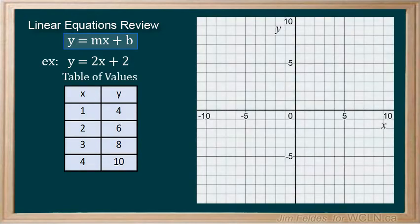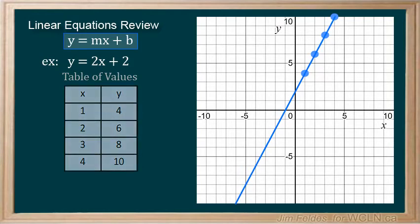When we plot the corresponding points on a graph, 1, 4, 2, 6, etc., we see our solution generates a straight line, where all the points on the line make the equation true.